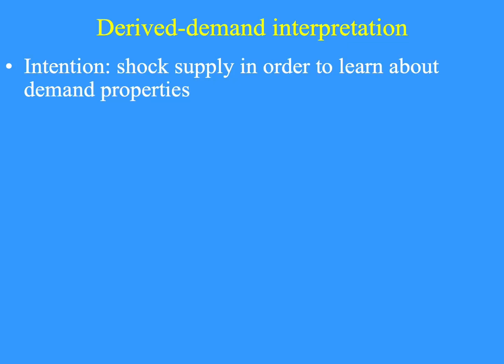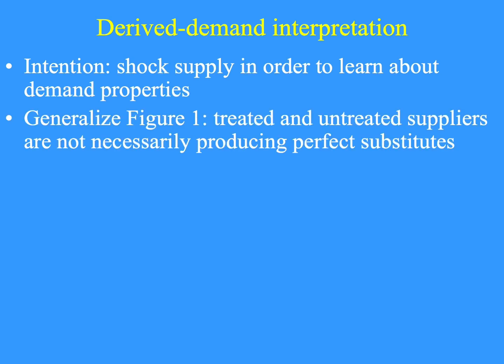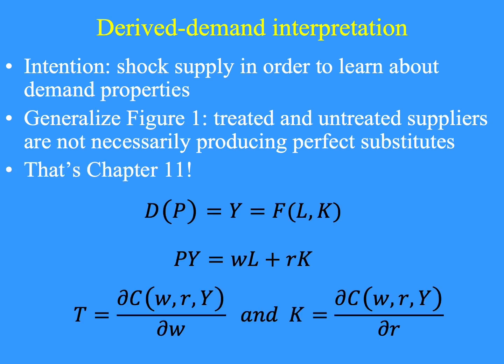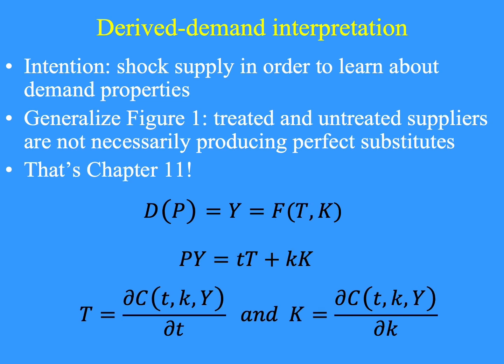Now we focus on experiments that intend to learn about features of demand by treating supply, which is the right approach in principle. Let's generalize the simple treatment-control example to relax the assumption that the suppliers are producing perfect substitutes. Now we have exactly the industry model from chapter 11. That model had two factors that were imperfect substitutes in a constant returns production function. We call them L and K in that chapter, although we'll replace L with T to help us remember that we refer to treatments. Output is Y, which must coincide with the quantity demanded at the equilibrium price P. Lowercase t and k are prices; uppercase T and K are quantities.